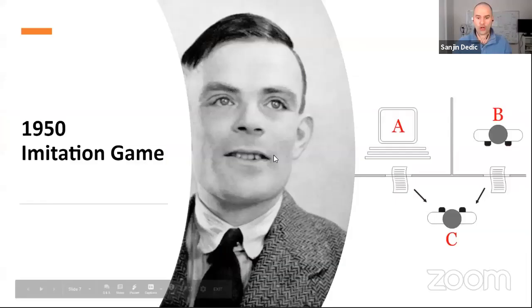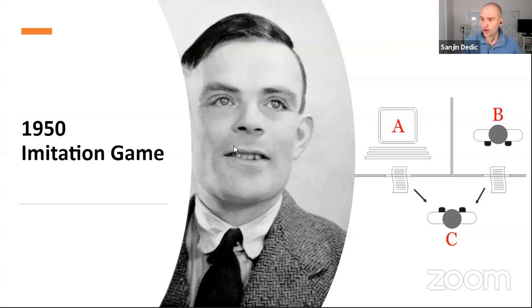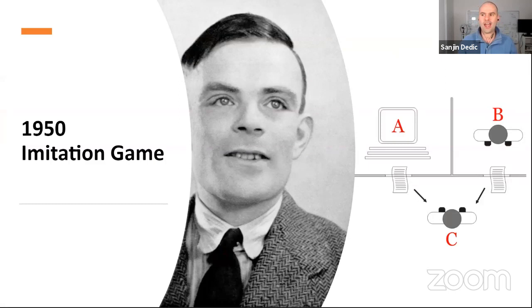In 1948, there isn't a computer around — nothing close to a general purpose programmable machine. There are machines that can do math calculations, like those created by Charles Babbage, and there was a machine that could break German codes, but it couldn't do anything else. In 1948, Turing defines what it would take to build a general problem-solving computer.